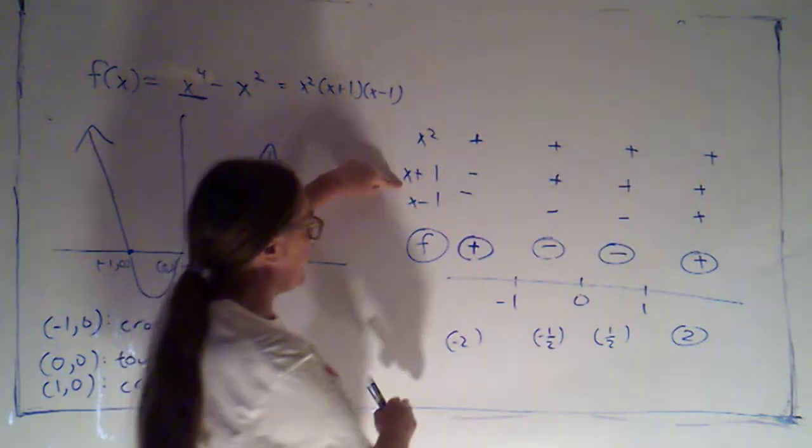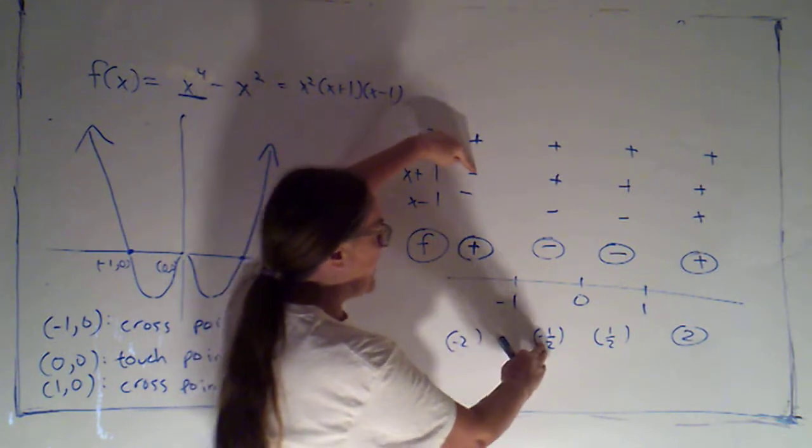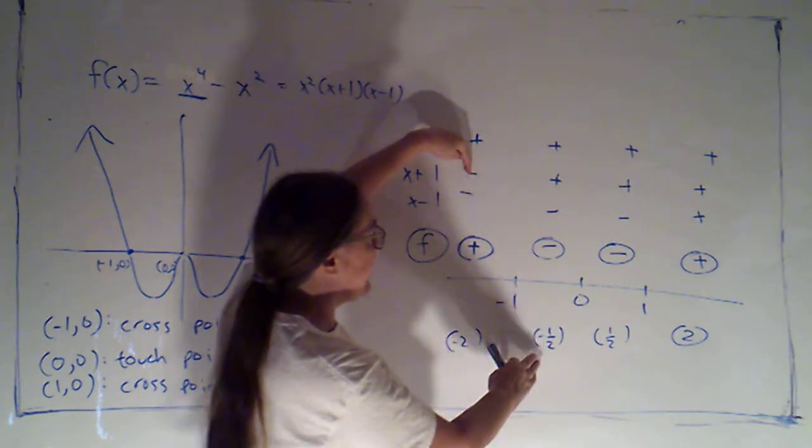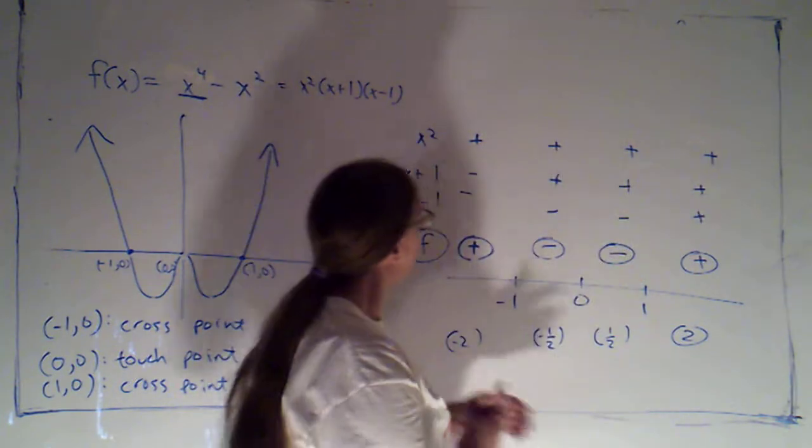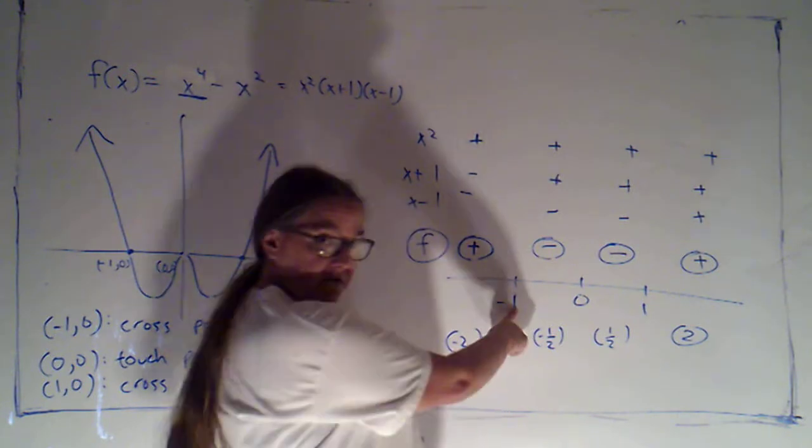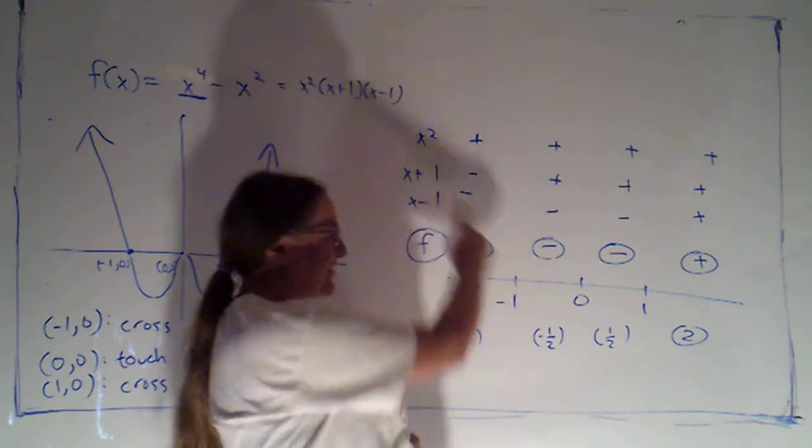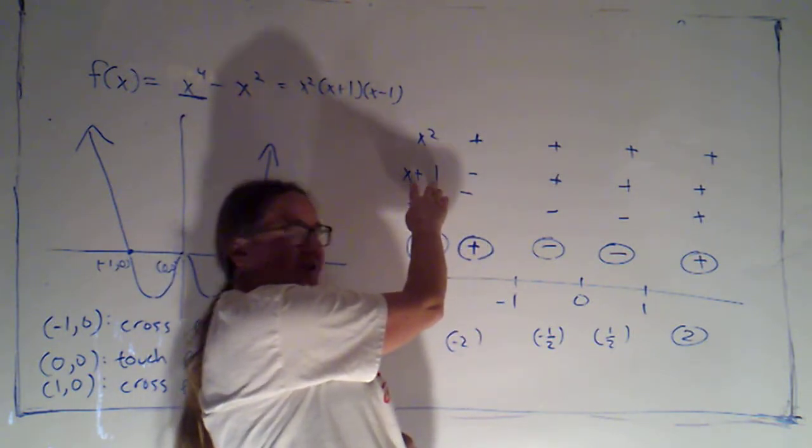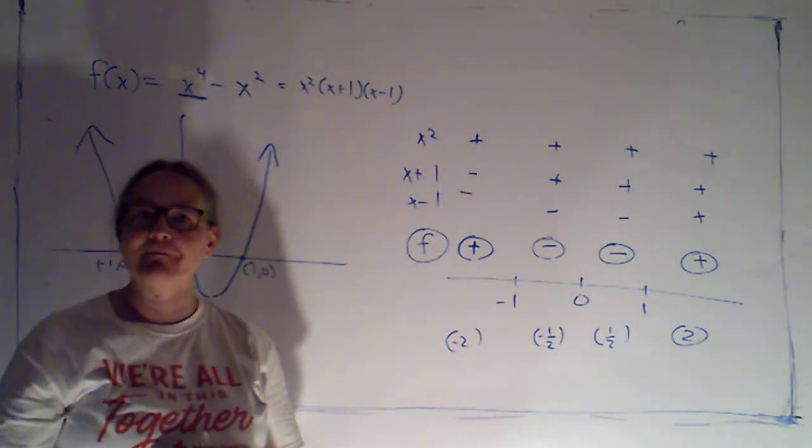Now, if I look at x plus 1, when I plug in negative 2, it's negative. When I plug in negative 1, it's positive. It changed sign here. Notice it went from negative, and then it was positive all the rest of the time. That's because this zero of negative 1 goes with that factor of x plus 1. That's the number that makes that factor zero. So the reason the function is zero at negative 1 is because that factor is zero at negative 1.